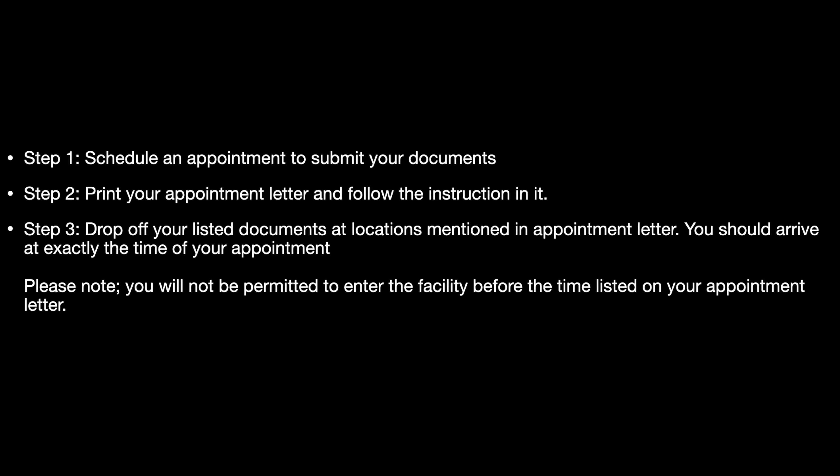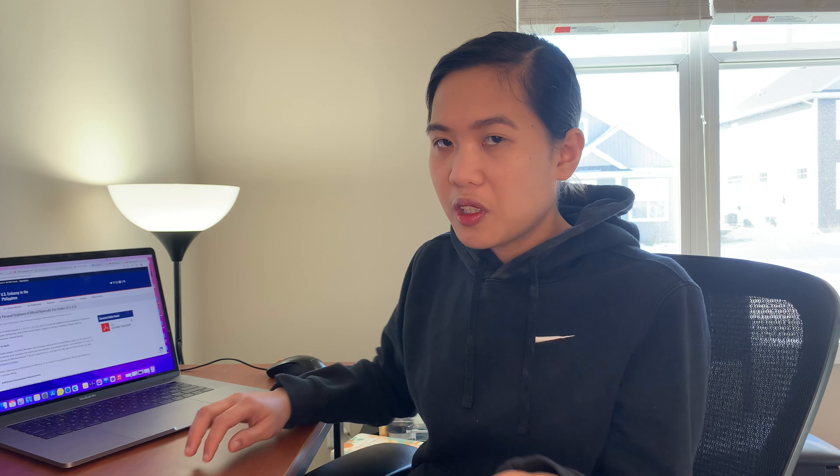Here are the steps: Step 1 — schedule an appointment to submit your documents. Step 2 — print your appointment letter and follow the instructions in it. Step 3 — drop off your listed documents at the locations mentioned in the appointment letter. You should arrive at exactly the time of your appointment; you will not be permitted to enter the facility before the time listed. What you need to bring: your current passport valid for the next six months, one U.S. standard-size photograph, and a photocopy of your Form I-797. That's all the documents needed for your U.S. embassy drop-off.